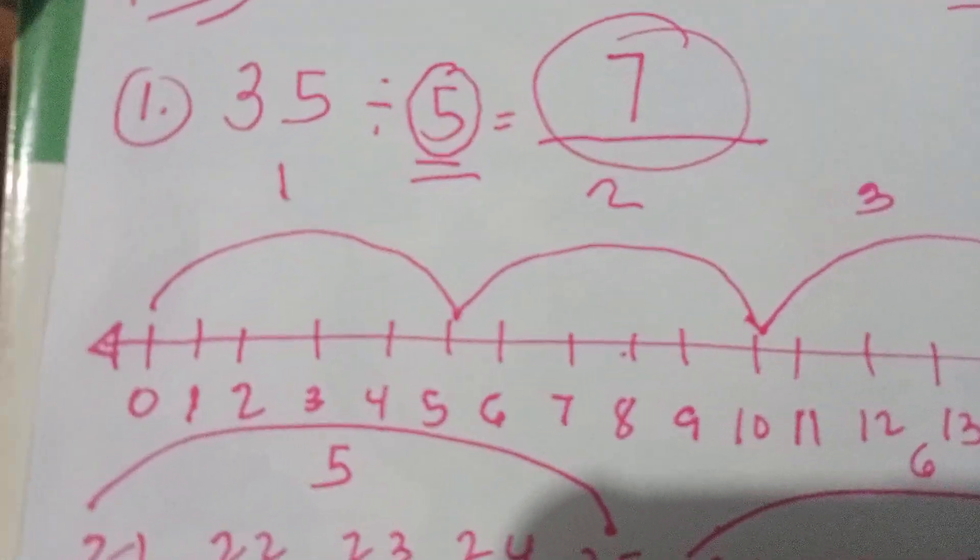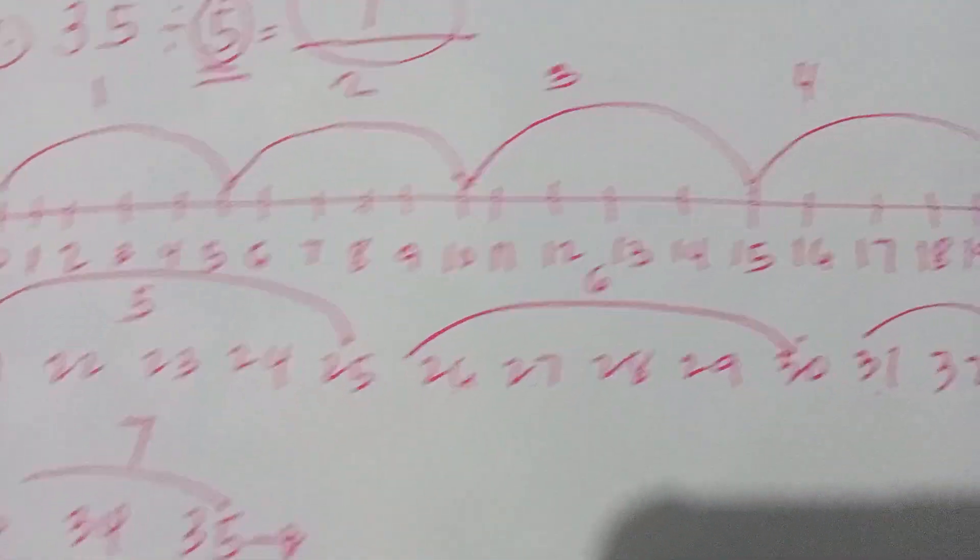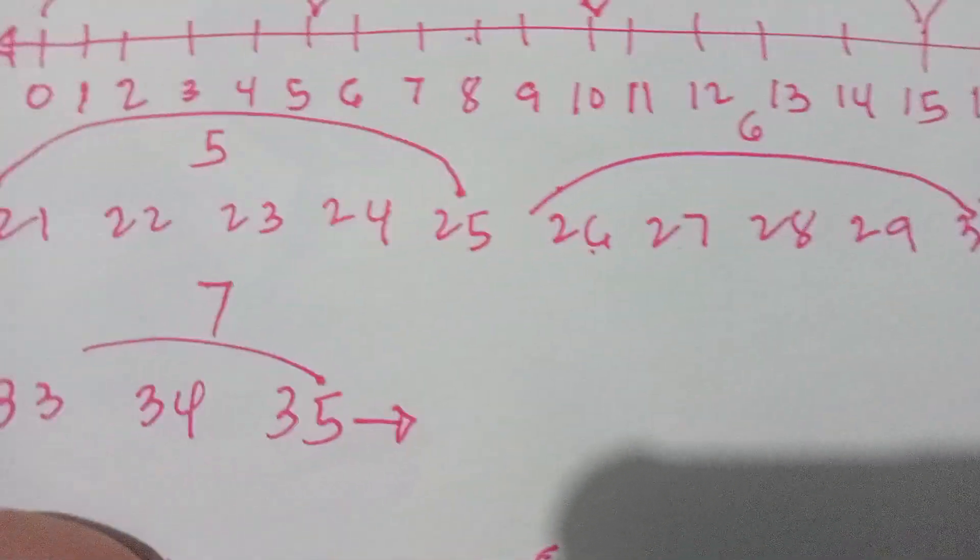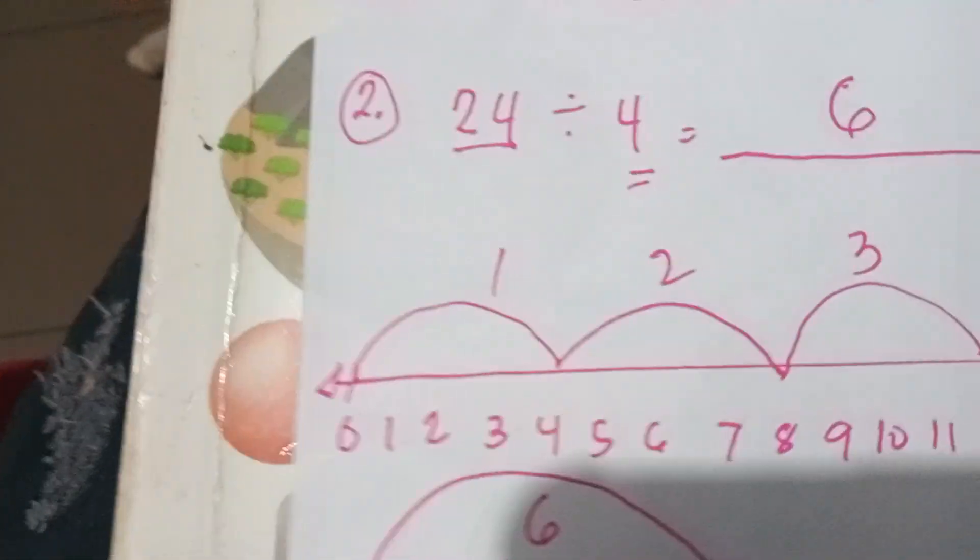I explained to him about counting from 0 until 5, then count 1 to 5, and then until it reaches 35. When he counted, he can write the answer is 7.